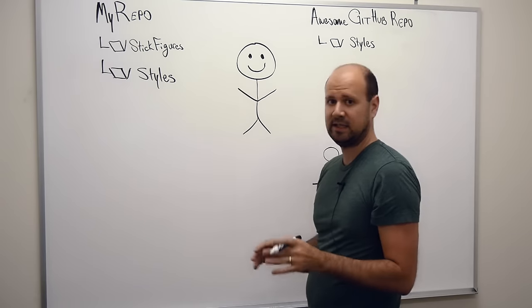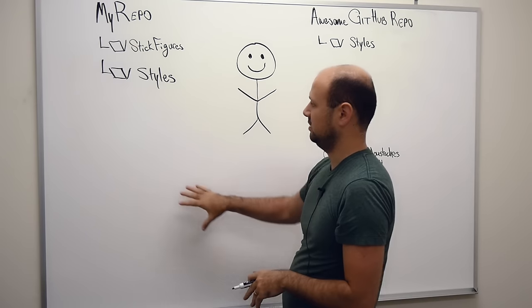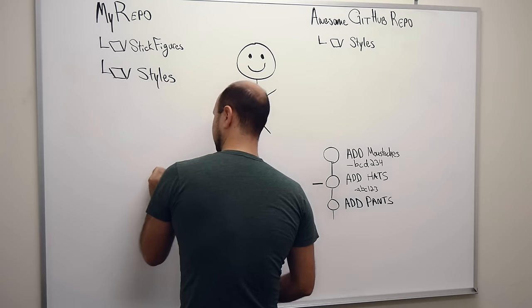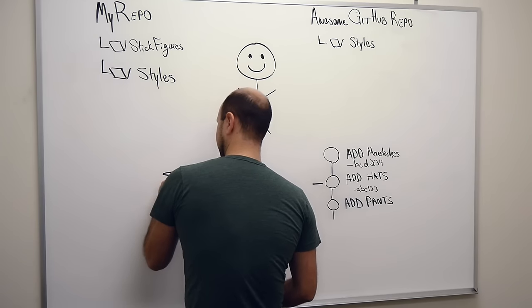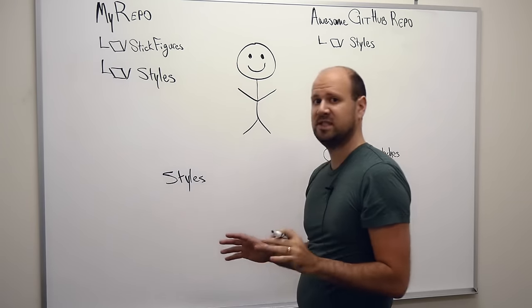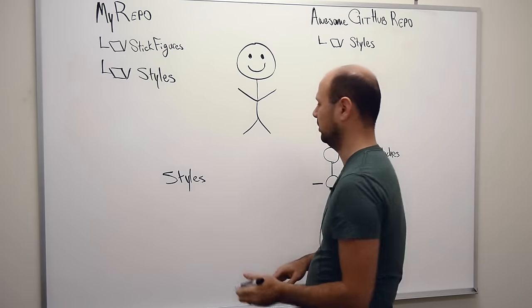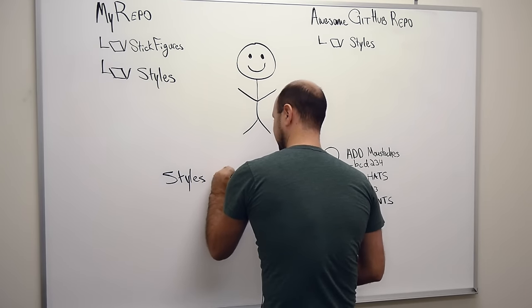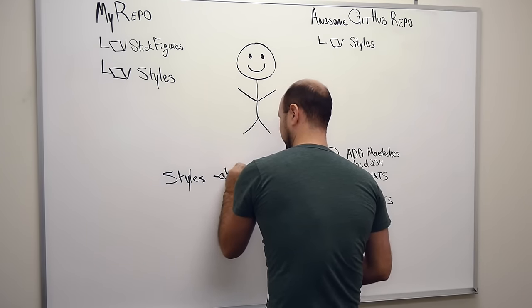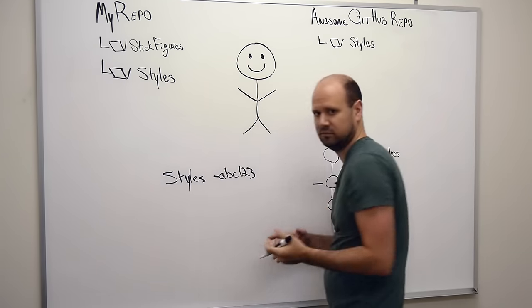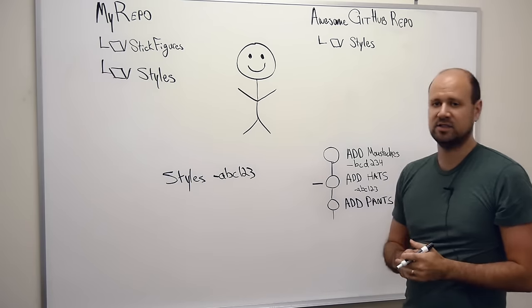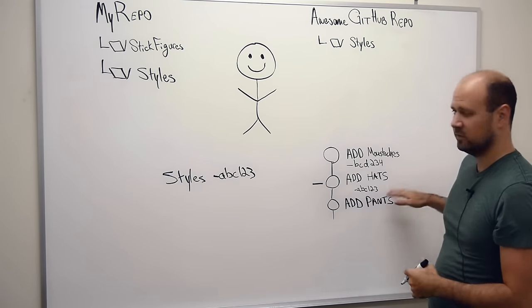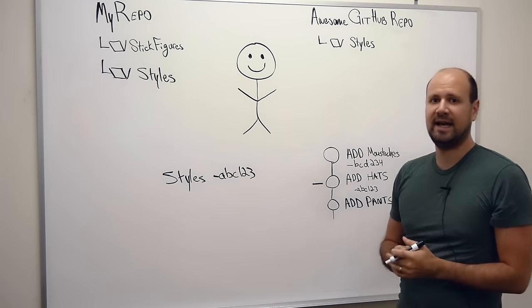Whenever you do actually add it, you would probably see in your Git history it would just show the name of the submodule — in this case, it's "styles" — and it'll show what specific commit we're pointing to. In this case it is abc123, the full SHA hash of that commit. Here we can see it's this commit right here where we just added hats.